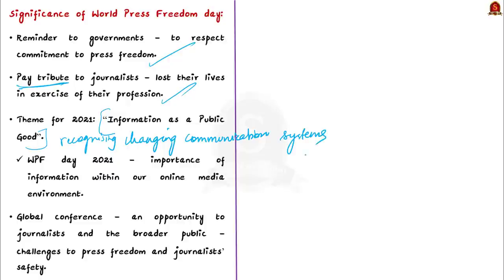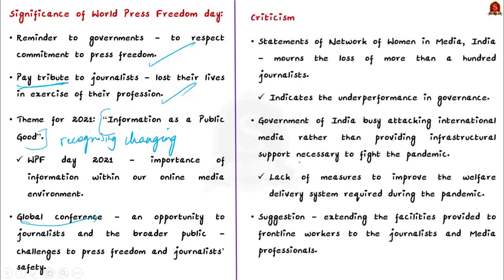World Press Freedom Day's celebration is organized alongside an annual global conference held since 1993, providing an opportunity to journalists and the broader public to discuss challenges facing press freedom and the safety of journalists, and to work together on identifying solutions. Based on this, the author talks about the need for a free press and highlights the impact of the COVID-19 pandemic and the sacrifice made by several journalists during the pandemic.